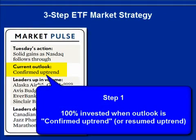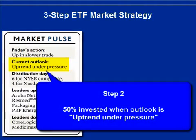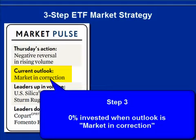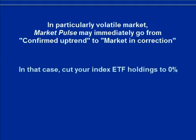Step 1: When the market pulse changes to confirmed uptrend, invest the full amount you've allocated to this approach. Step 2: When the market pulse changes from confirmed uptrend to uptrend under pressure, reduce your holdings to 50%. Step 3: When the market pulse changes to market in correction, cut your holdings to 0%. In a particularly volatile market, the outlook may immediately go from confirmed uptrend to market in correction.